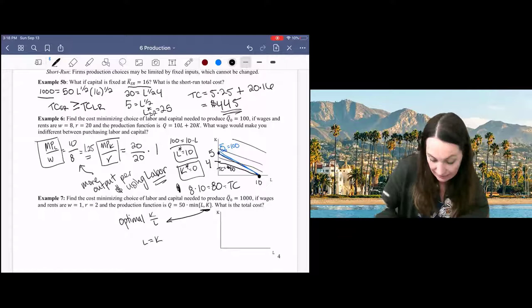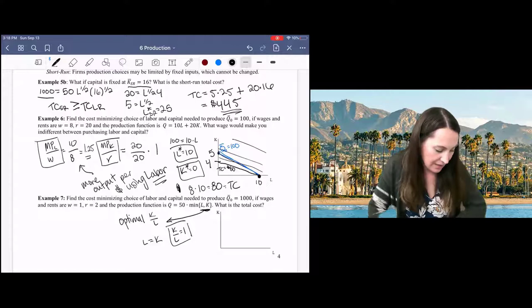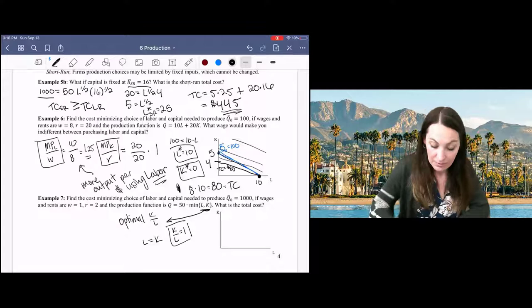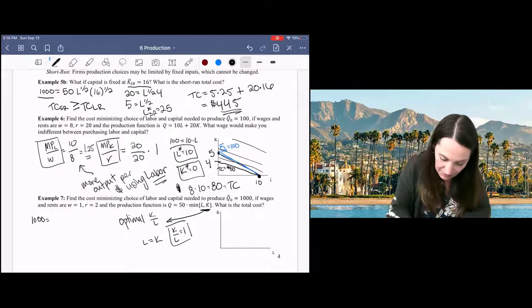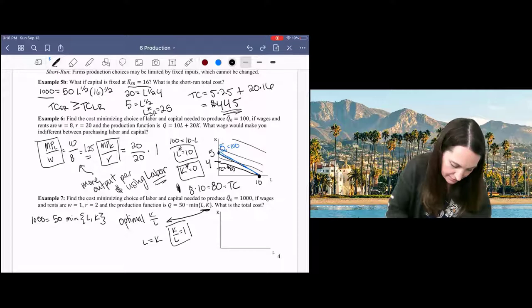That's our optimal capital labor ratio. And then I can plug that into my production function to find the optimal amount of labor and capital that I need. So here, I would like to produce 1,000 units of this product. And so I set that equal to my production function, and so I've got 1,000 divided by 50 is 20, and that's got to be equal to the minimum of L and K.